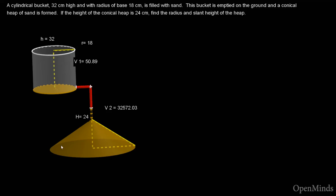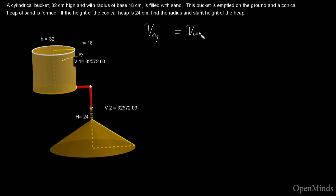Let's build the logic of the problem. The volume of the sand in the form of a conical heap should be equal to the volume of sand that was in the bucket. The volume of the sand was 32,572.03, which is exactly the same amount in the conical form. So the volume of the cylinder equals the volume of the cone.